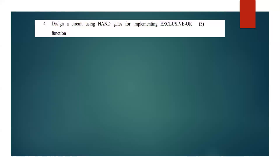Design a circuit using NAND gates for implementing the XOR function. The XOR function output is AB complement plus A complement B. This is the XOR function.